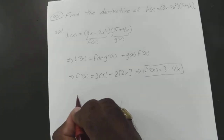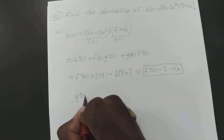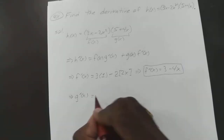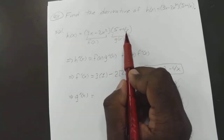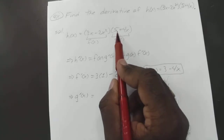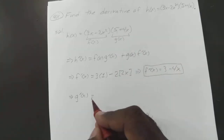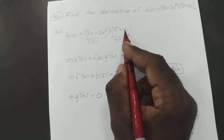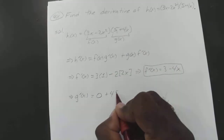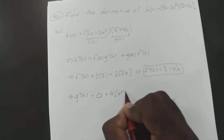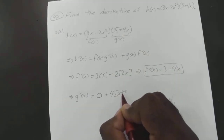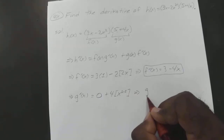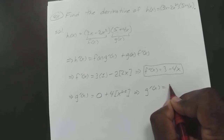So now we have to find our g prime of x. If our g of x is 5 plus 4x, the derivative of the constant is automatically going to be 0. So the derivative of 4x is just going to be 4. So your g prime of x is just 4.